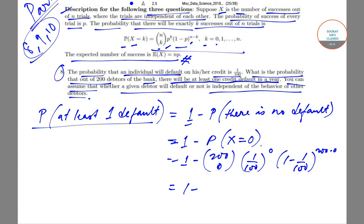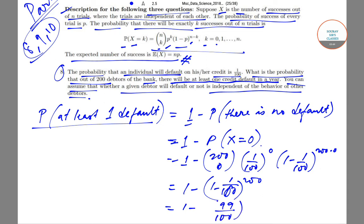Since 200_C_0 = 1 and (1/100)^0 = 1, this simplifies to 1 − (99/100)^200. So the probability of having at least one default is 1 − (99/100)^200.